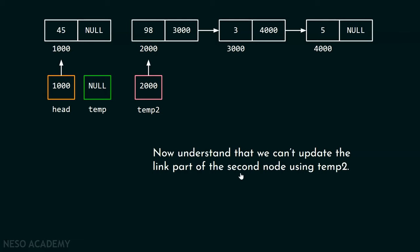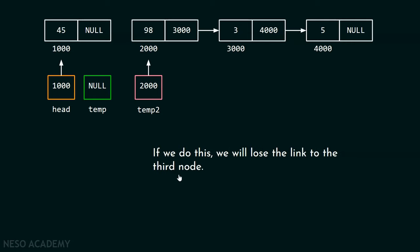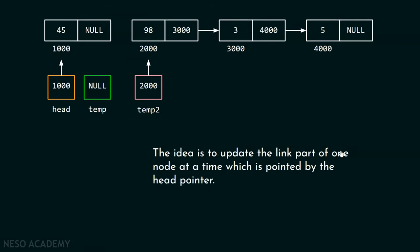We can't update the second node's link right now — doing so would lose the reference to the third node. The idea is to update one node at a time, specifically the node currently pointed to by the head pointer. Currently, head is pointing to the first node.